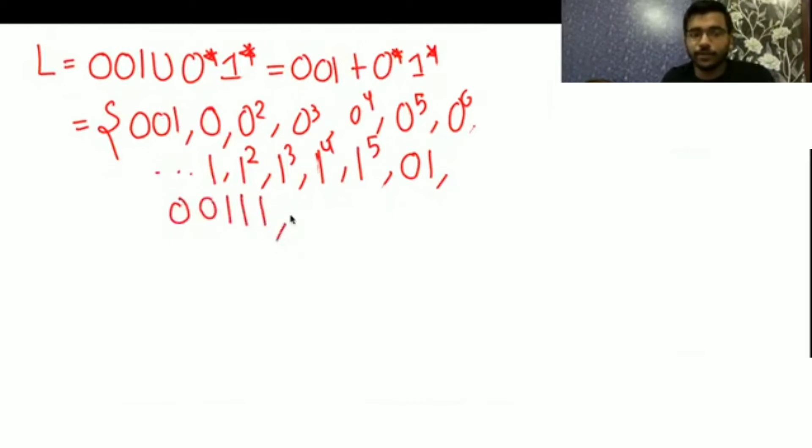So if we see this, it is equivalent to 0*1* only. This language is equal to 0*1* only, because 001 you can generate from this and it is inside, meaning it is a subset. 001 is in 0*1*.